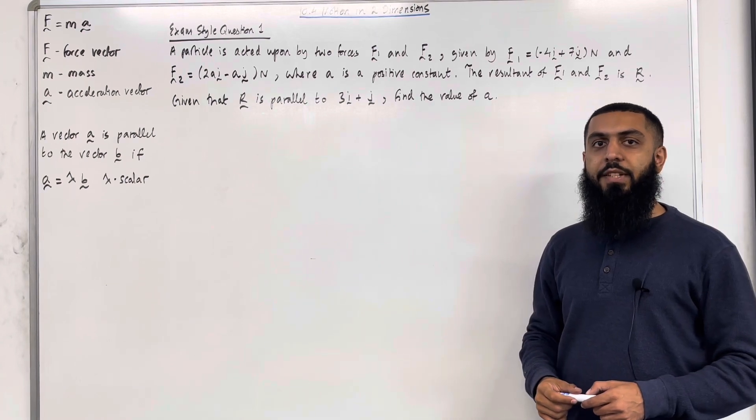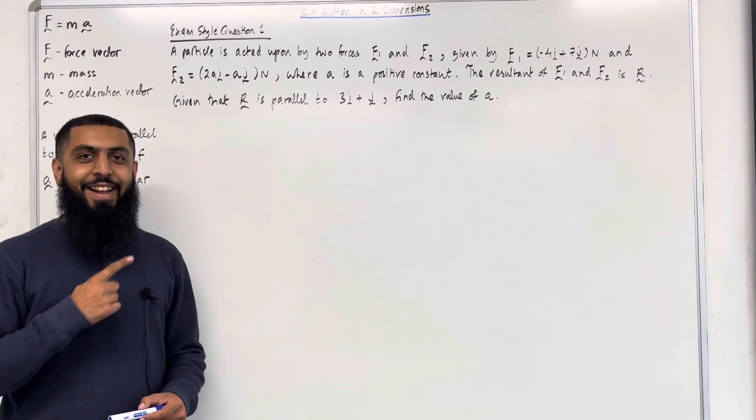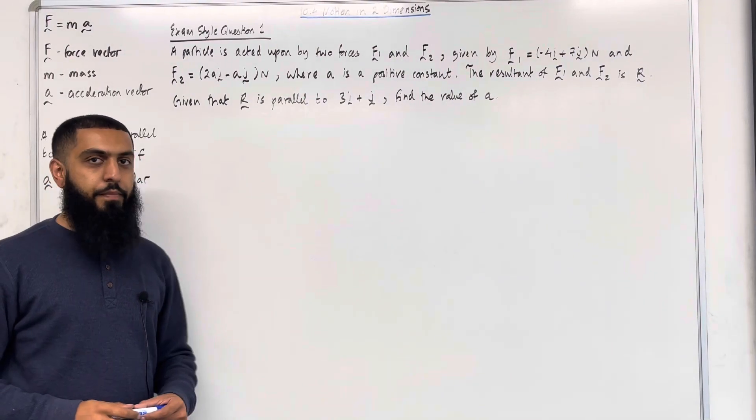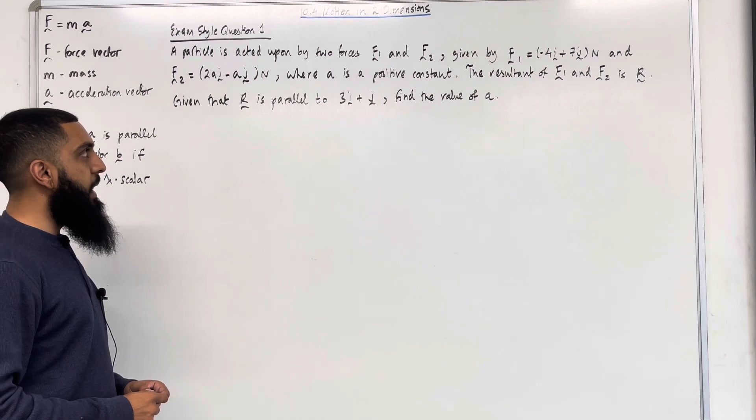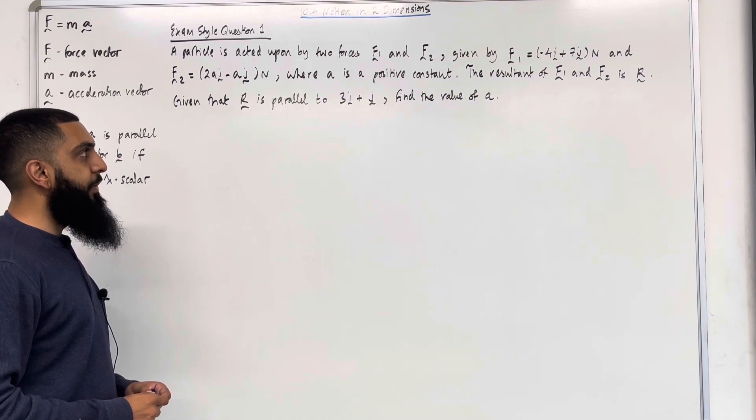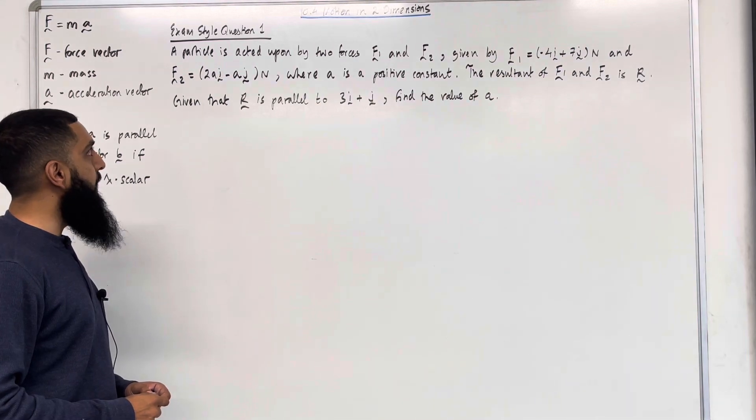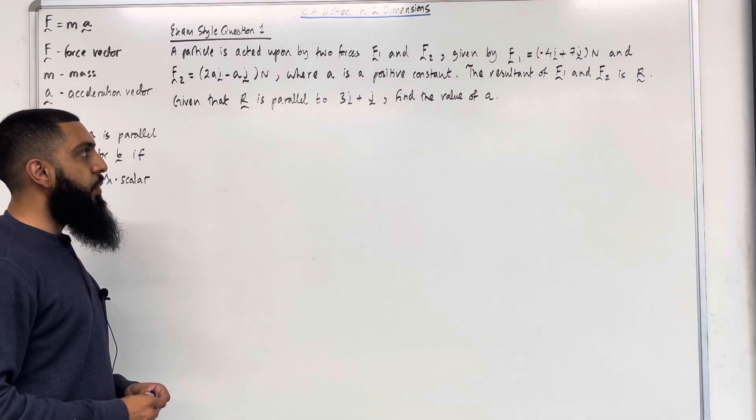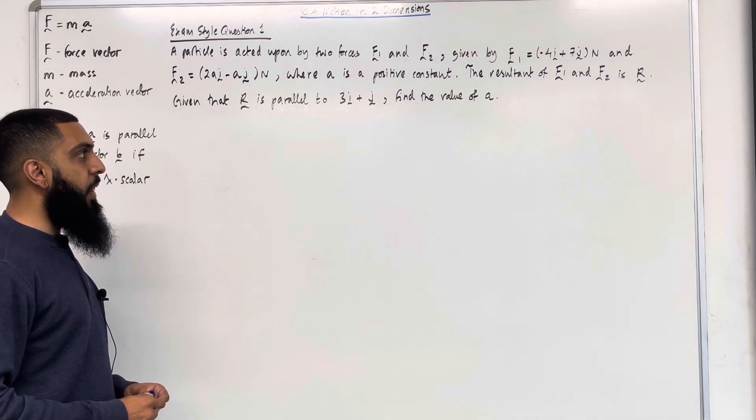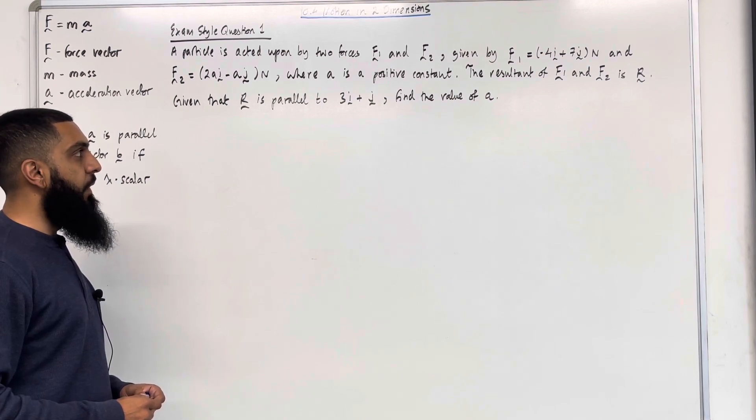I'll be implementing these key facts within two exam style questions. Here is exam style question 1. A particle is acted upon by two forces F1 and F2, given by F1 equals minus 4i plus 7j Newtons, and F2 equals 2ai minus aj Newtons, where A is a positive constant. The resultant of F1 and F2 is R. Given that R is parallel to 3i plus j, find the value of A.